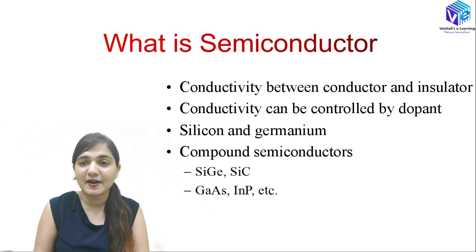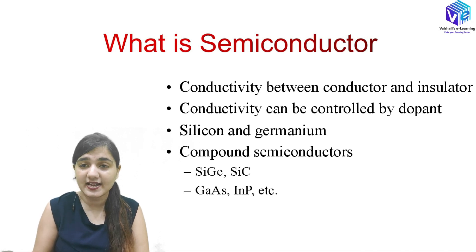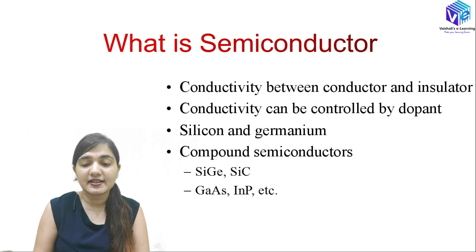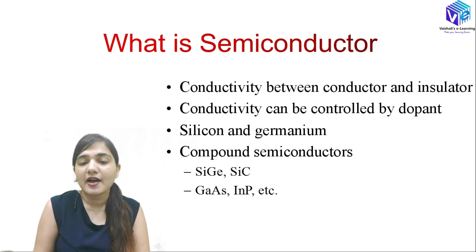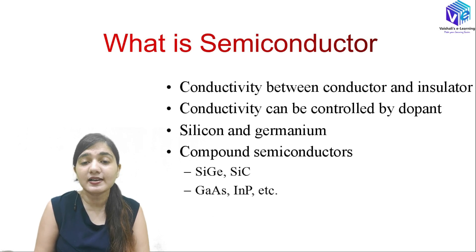We also have compound semiconductors. A very good example is gallium arsenide (GaAs). Then we have silicon germanium, silicon carbide, and indium phosphide (InP), along with many more compound semiconductors.